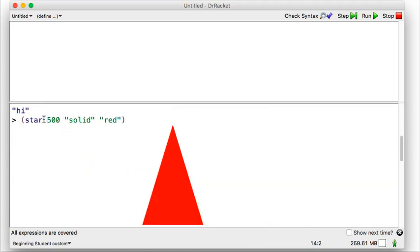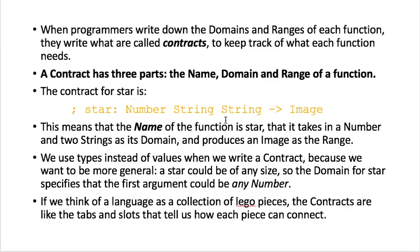So a star has its, the function is called star. The first input is a number that tells us how big it's going to be. The second one is a string, and the third one is a string. So let's go back here and look, and that's what it says. The function star takes in a number and a string and a string, and it produces an image.